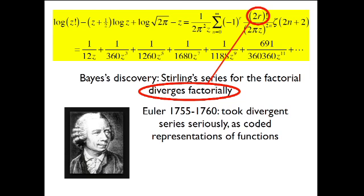And what he discovered was that Stirling's series for the factorial itself diverges factorially. So here's a factorial and it's Stirling's series. We all are familiar with it. Now, meanwhile, between the submission and publication, Euler wrote very extensively on divergent series and he wasn't bewildered at all. He very clearly understood that divergent series are coded representations of functions which have to be interpreted somehow. And he provided a number of different interpretations.